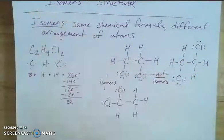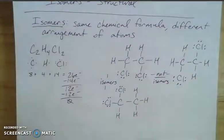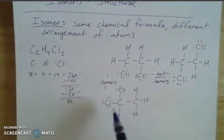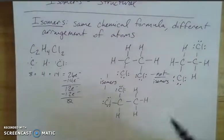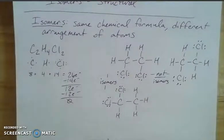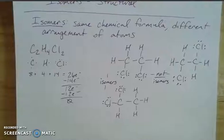So those two are not isomers of each other, but these two structures — one chlorine on each carbon versus both chlorines on the same carbon — are isomers. The difference is the rearrangement of atoms and chemical bonds. These are called structural isomers: same pieces and parts, but put together in a slightly different bonding pattern.